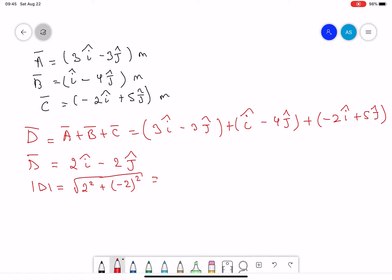If you do the calculations, 2 squared plus 2 squared, you will get the magnitude is equal to 2.83 meters.